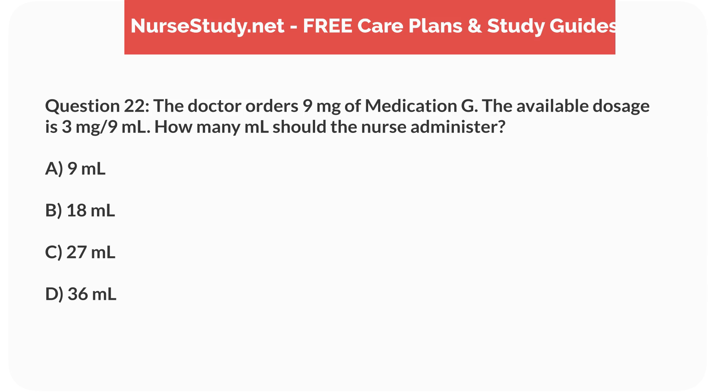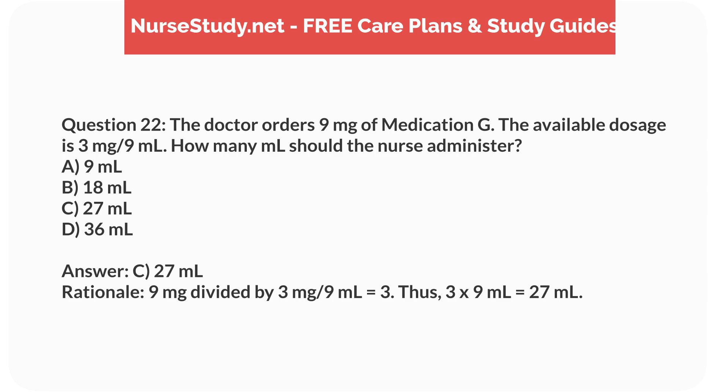Question 22. The doctor orders 9mg of medication G. The available dosage is 3mg per 9mL. How many mL should the nurse administer? a. 9mL, b. 18mL, c. 27mL, d. 36mL. Answer: c. 27mL. Rationale: 9mg divided by 3mg per 9mL equals 3. Thus, 3 times 9mL equals 27mL.